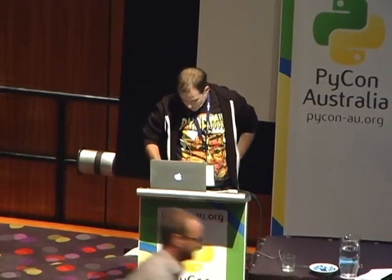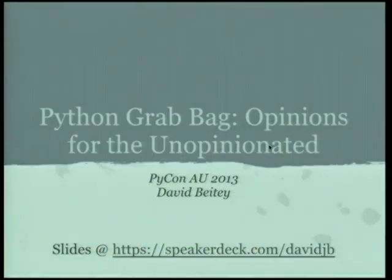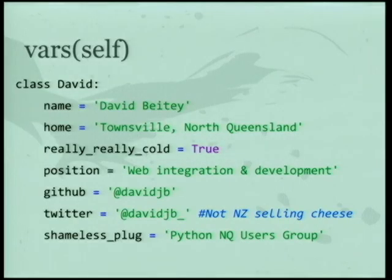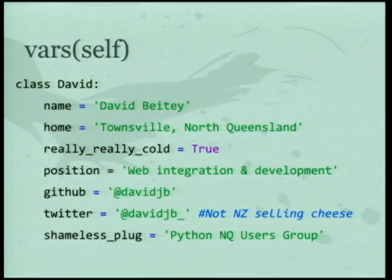Hi, my name is David Beattie. This is a grab bag of Python tools I find useful that I work with. I'm from Townsville, North Queensland — I am very, very cold right now. I work with web integration and development, various different technologies and lots of different open source. You can find me on GitHub and Twitter. And the shameless plug is: I'm setting up a Python North Queensland users group. Is anyone from North Queensland?